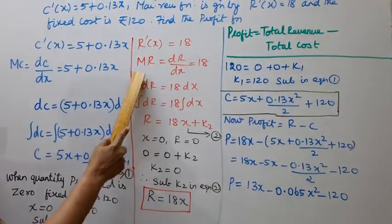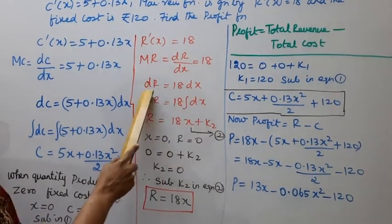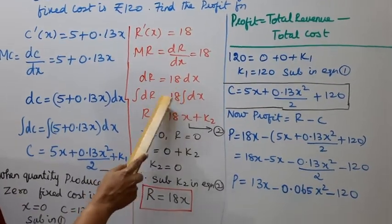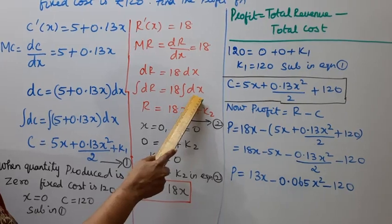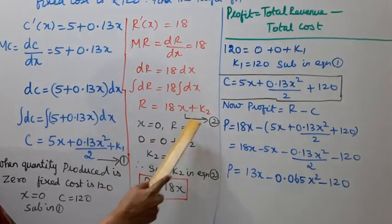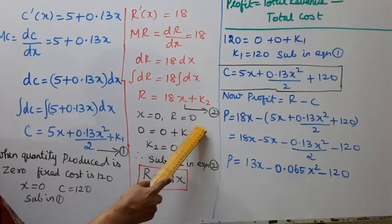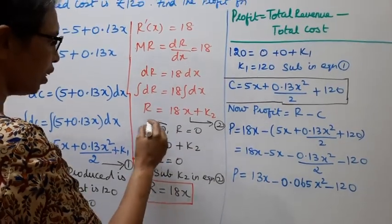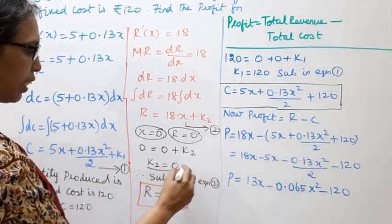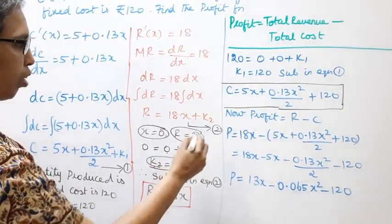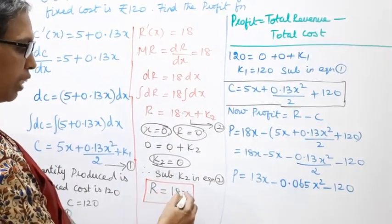Now for revenue: R'(x) = DR/DX = 18, so DR = 18 DX. Integrating both sides: R = 18x + K2. Substituting x = 0, R = 0 gives K2 = 0. Therefore R = 18x.